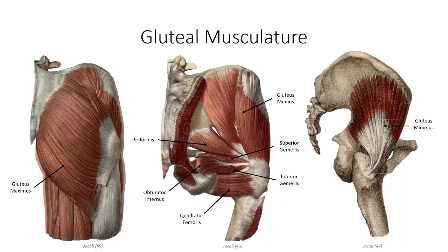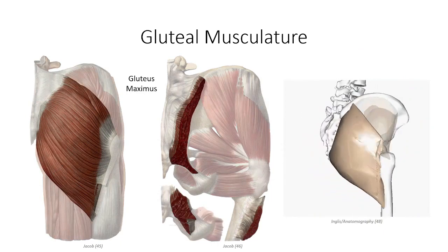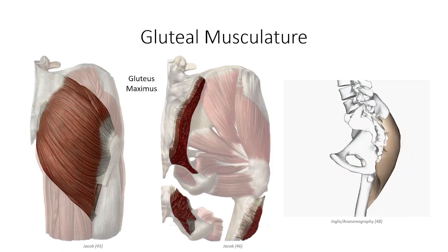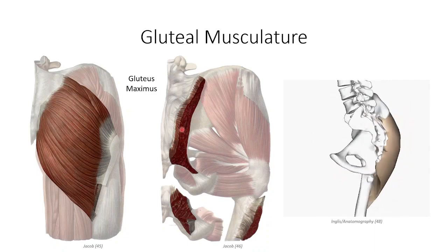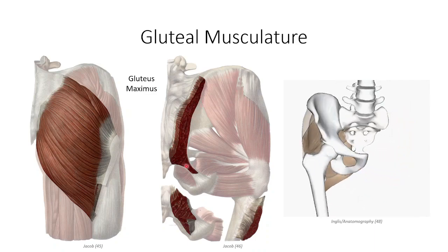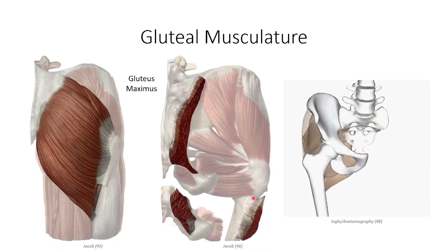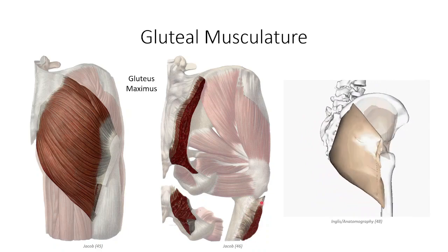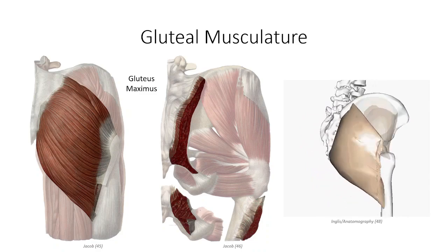The muscles of the gluteal region can be divided into superficial and deep regions. The most prominent muscle — and also the thickest muscle in the body — is the gluteus maximus. It has an incredibly broad origin off the lateral aspect of the sacrum, the medial aspect of the ilium bordered by the posterior gluteal line, and the sacrotuberous ligament. The fibers then project infralaterally to insert on the iliotibial band from posteriorly, with the insertion extending inferiorly to the gluteal tuberosity on the posterior aspect of the femur.